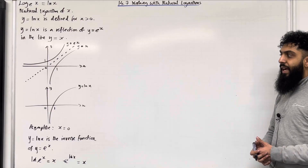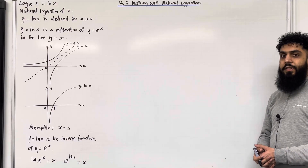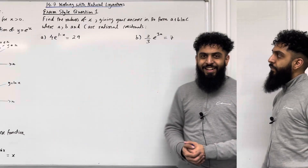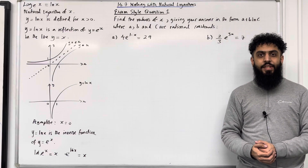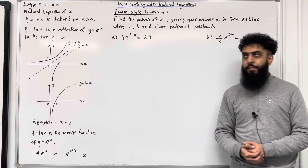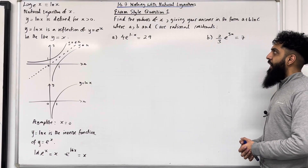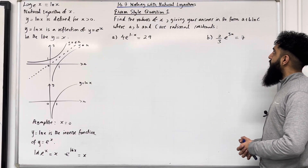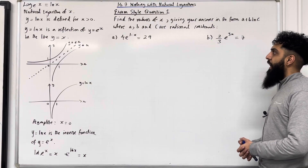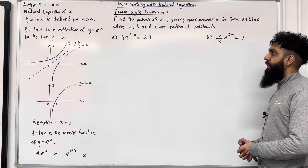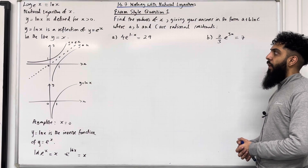I'll be applying these key facts to exam style questions. Let's have a look at exam style question 1: find the values of x, giving your answer in the form a + b·ln c, where a, b, and c are rational constants. Part a: 4e^(1-x) = 29.